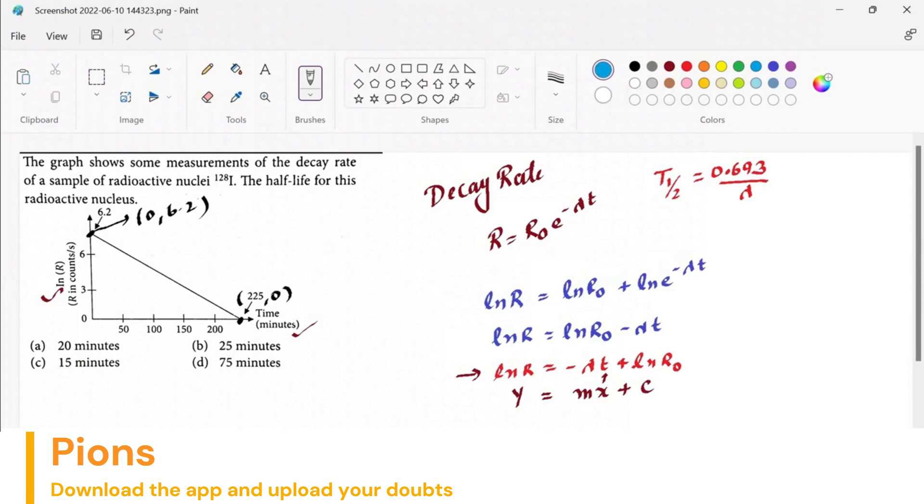Let's calculate the slope. Slope m equals (0 - 6.2) divided by (225 - 0), which is y₂ - y₁ over x₂ - x₁. Let's calculate this using a calculator.